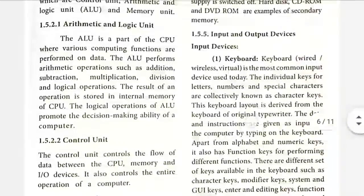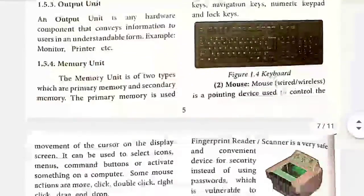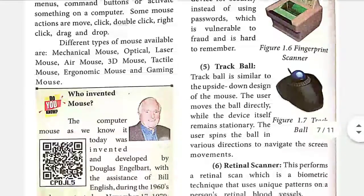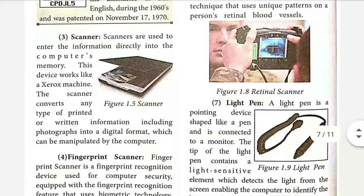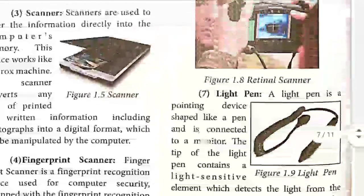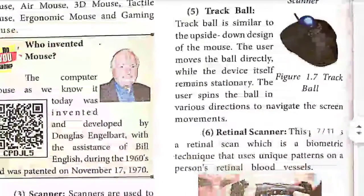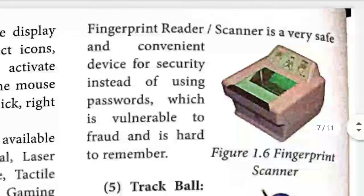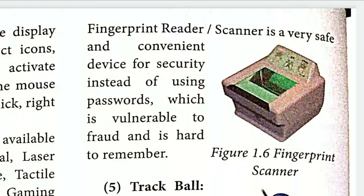Another input unit is the scanner. It scans information — you can scan a printed document and store it as an image format or document. Next is the fingerprint scanner. This scanner scans your fingerprints and stores that information. These are all different types of input units.